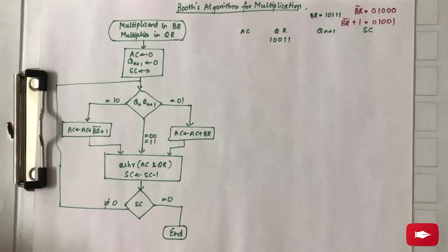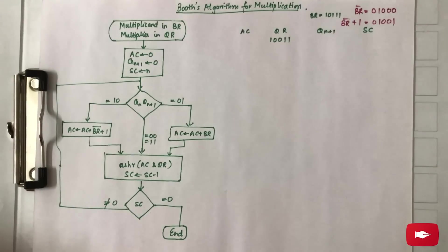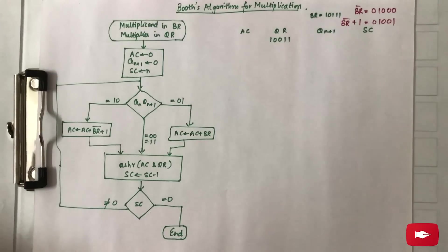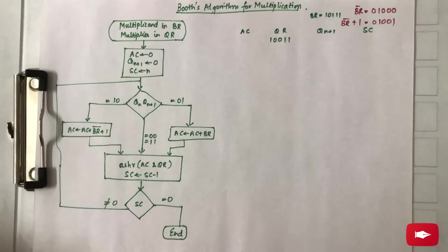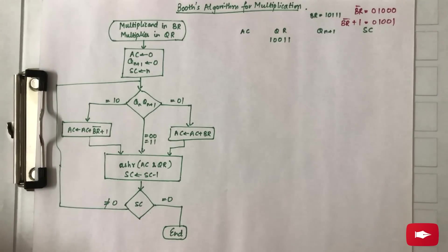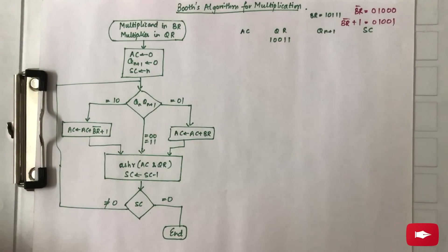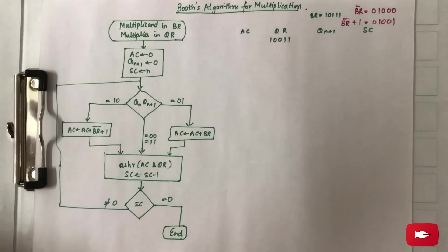One thing to note is that the number of bits in Q_R or B_R should basically be the larger number of bits. For example, if we have two numbers B_R and Q_R and the number of bits in Q_R are more compared to B_R, the total number of bits in both numbers need to be equal to the number of bits in the larger number, and the other one can be made equal using padding.